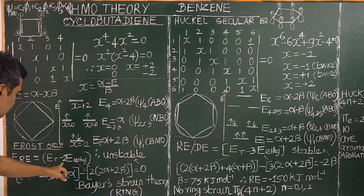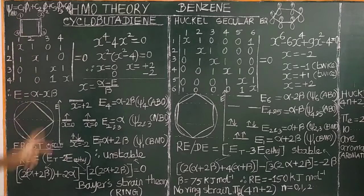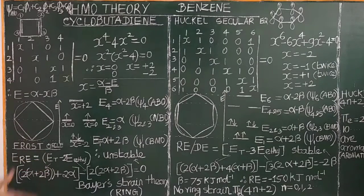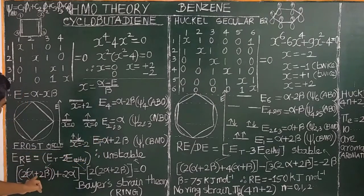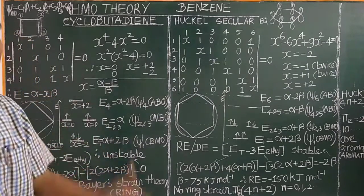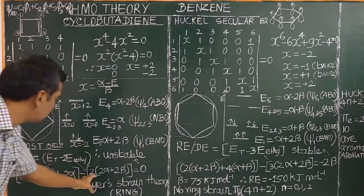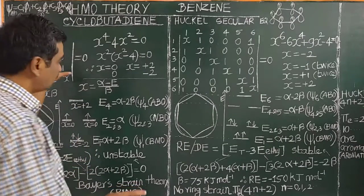Now let us calculate the resonance energy as we did for 1,3-butadiene. Cyclobutadiene is considered to consist of two ethylene molecules. In ethylene there is no delocalization. The total energy ET equals 2(alpha + 2 beta) for two electrons in the bonding MO. Comparing with 2 ethylene molecules (2 × (2 alpha + 2 beta)) gives delocalization energy equal to 0. Therefore, there is no delocalization energy and no resonance energy.